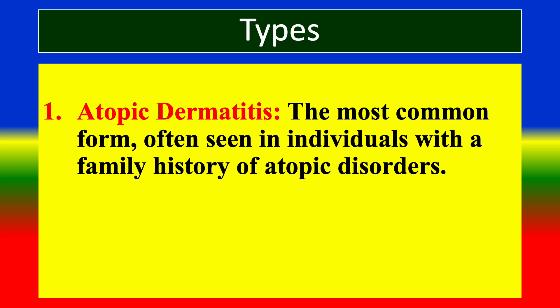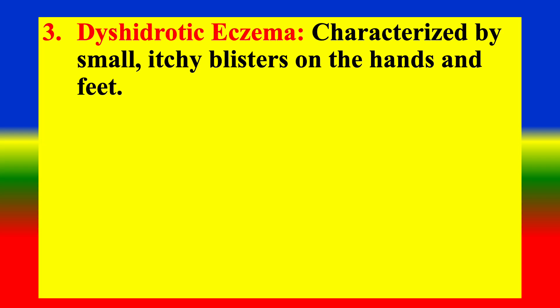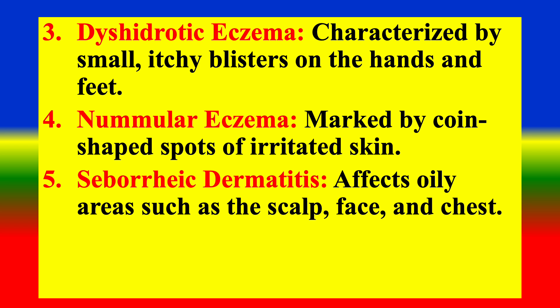Types: 1. Atopic dermatitis — the most common form, often seen in individuals with a family history of atopic disorders. 2. Contact dermatitis — caused by direct contact with irritants or allergens. 3. Dyshidrotic eczema — characterized by small itchy blisters on the hands and feet. 4. Nummular eczema — marked by coin-shaped spots of irritated skin. 5. Seborrheic dermatitis — affecting oily areas such as the scalp, face and chest.